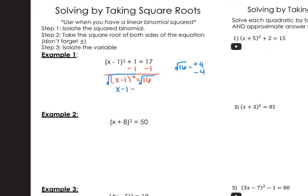So we have x minus 1 equals plus or minus 4, and now we're going to split this into two equations. We have x minus 1 equals positive 4, and x minus 1 equals negative 4. Now we just solve — add 1, so x equals 5 is one solution, and add 1 here, so the other solution is x equals negative 3.